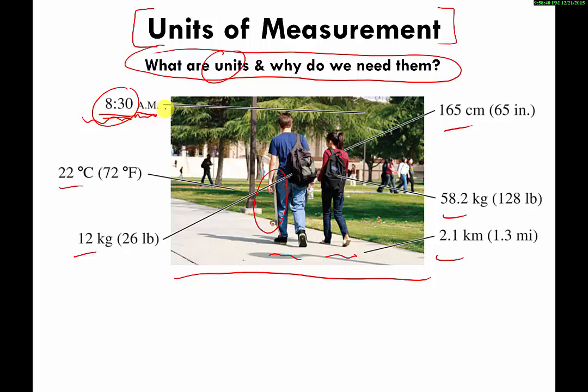The measurement shows 22 degrees Celsius for temperature - 22 is the number, degree Celsius is the unit. You can also say the same thing as 72 degrees Fahrenheit, which is a different unit for measuring temperature. Because it's a different unit, you get a different number.